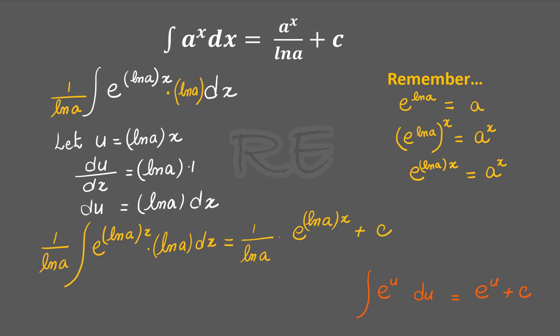And it's equivalent to one over ln a times e to the ln a x plus c. One over ln a, and e to the ln a x is right here. e to the ln a x is equal to a to the x, so one over ln a times a to the x plus c, which is a to the x over ln a plus c.